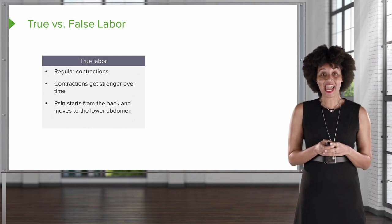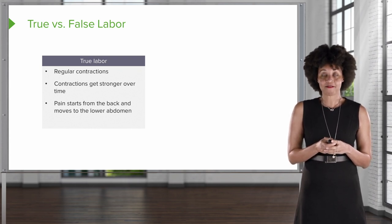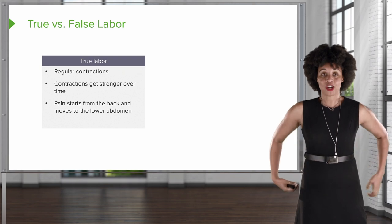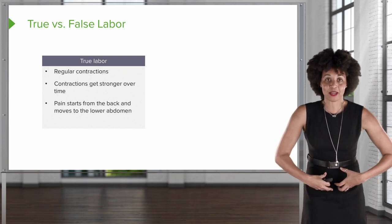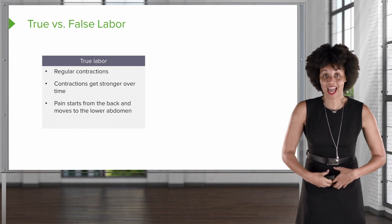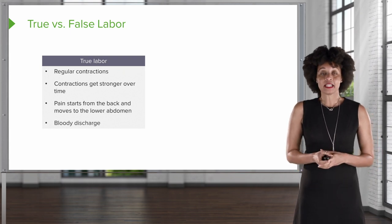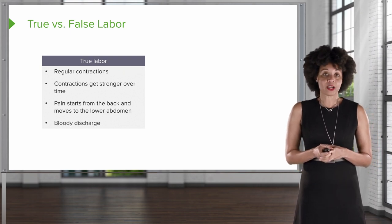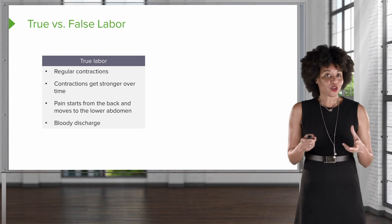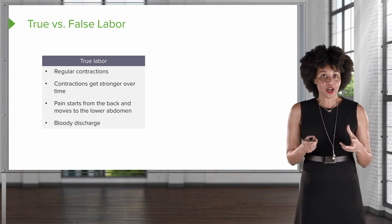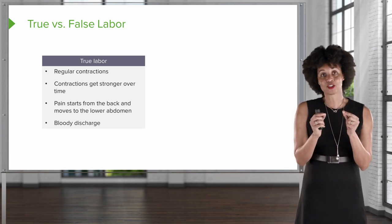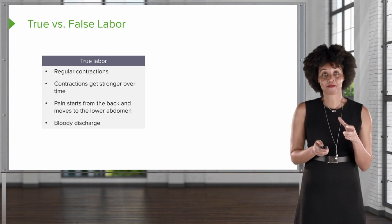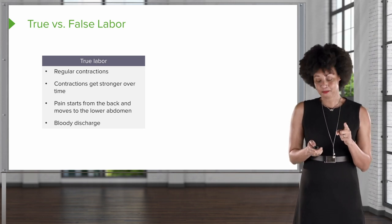Also, think about the location of the pain. The patient may find that the pain starts from the back and then wraps around like a great big hug to the front of the lower abdomen. Finally, the patient may experience bloody discharge — also called bloody show — which results from capillaries that burst around the cervix as it begins to dilate. These are signs of true labor.